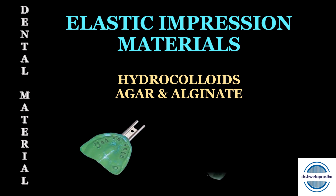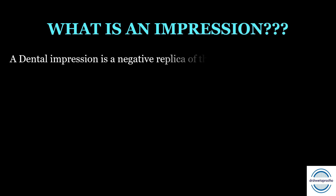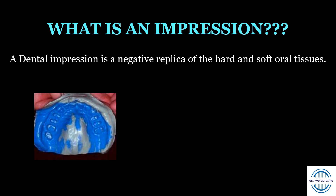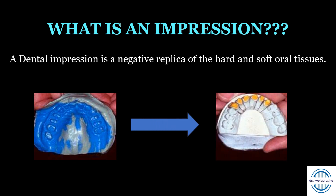Let's begin. First of all, what is an impression? We all know that a dental impression is the negative replica of the hard and the soft oral tissues. We make the impression and then we pour it with a gypsum product, and then we get the positive replica — that is the cast, die, or the model.